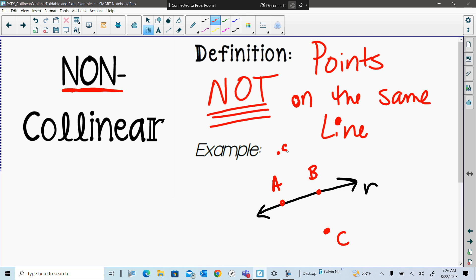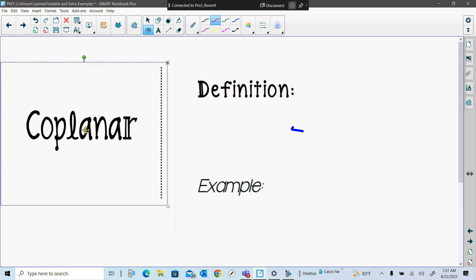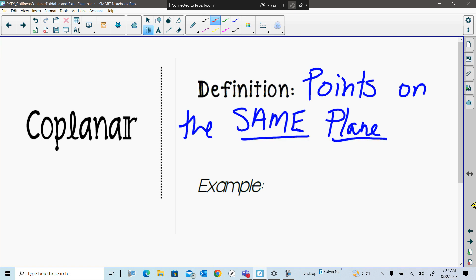All right, so we're going to go to coplanar, bottom left. Coplanar are points that are on the same plane, points that are on the same plane.